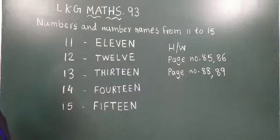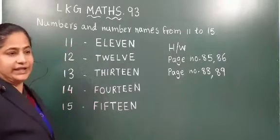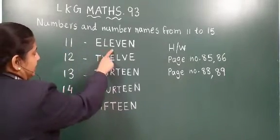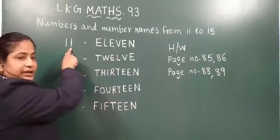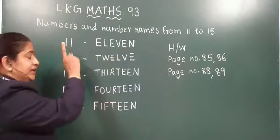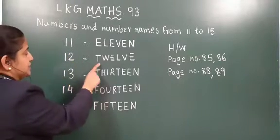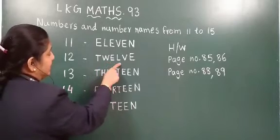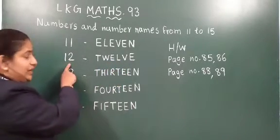Now I will read once more. First: one one — eleven — E, L, E, V, E, N. Eleven. Now eleven ke baad: one two — twelve. Spellings: T, W, E, L, V, E — twelve.